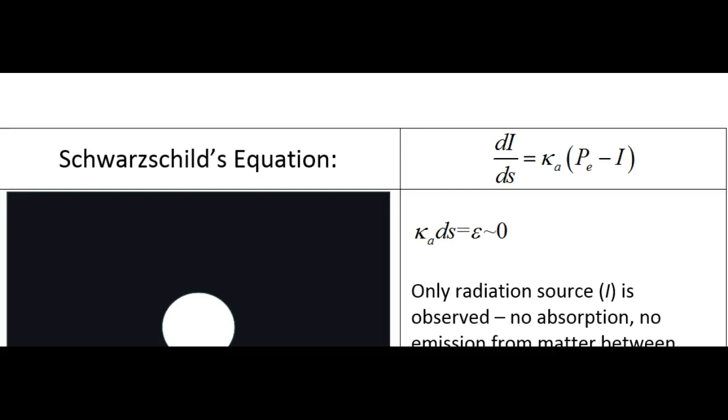We can see what happens as we change the infrared absorptivity and emissivity for cases in which there are two sources of radiation, a solid object like Earth and the atmosphere, which can both absorb and emit.